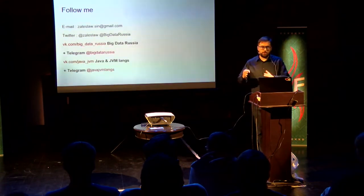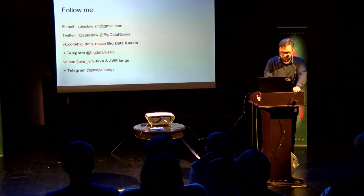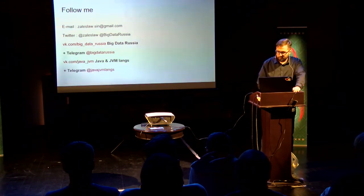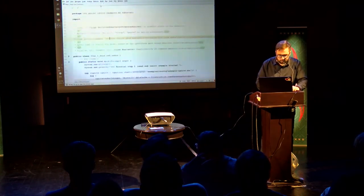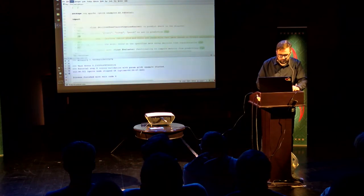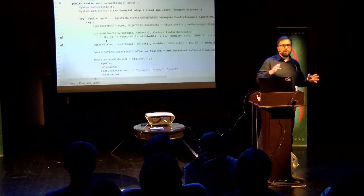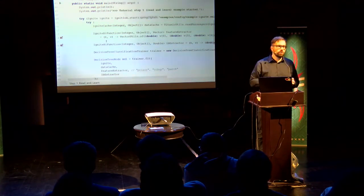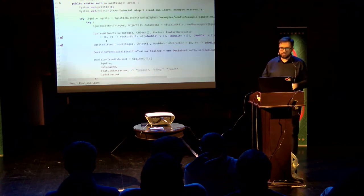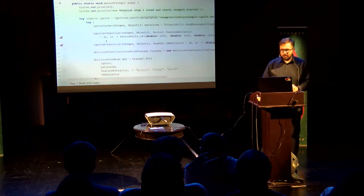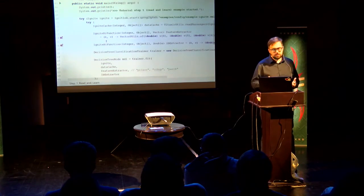Now let's do the demo. I will run a few examples, and other examples you can run by yourself. First of all, we have the Titanic dataset. We can find data about Titanic passengers — their age, class, amount of parents, and other different features. We will use the Decision Tree Classification Trainer to train and get a Decision Tree node model. We can print this model with a special beautifier.